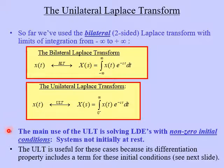The main use of the ULT is solving linear differential equations with non-zero initial conditions. In other words, systems that are not initially at rest. And the reason it's useful for this is we're going to see on the next slide that the differentiation property of this transform includes a term for initial conditions.